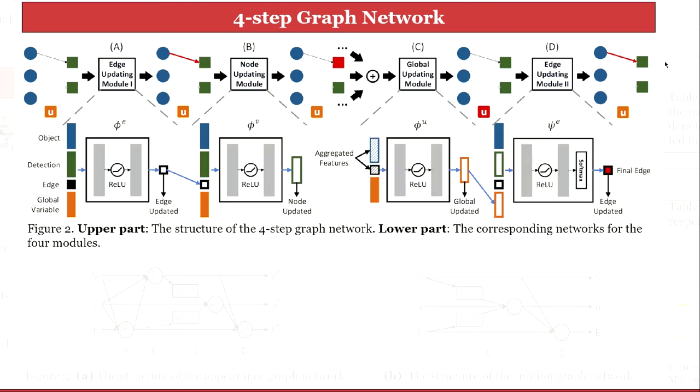All the updating modules are neural networks whose structure consists of two fully connected layers and a leaky ReLU in the middle. The cross-entropy loss is used to train our graph networks.